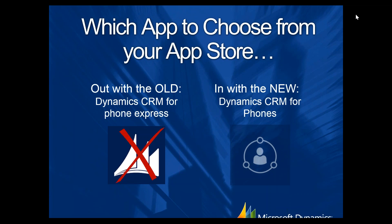When you go to your app store on your mobile device and search for Dynamics CRM you're going to be presented with two options. You'll see an old icon and a new icon — that's how you differentiate which one to choose. The old one is actually named Dynamics CRM for Phone Express, and the new one is Dynamics CRM for Phones. The definitive factor is that icon.